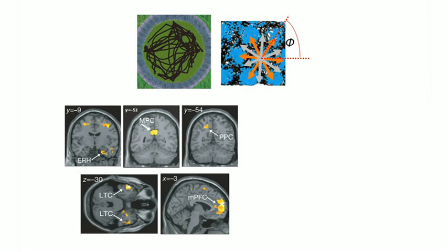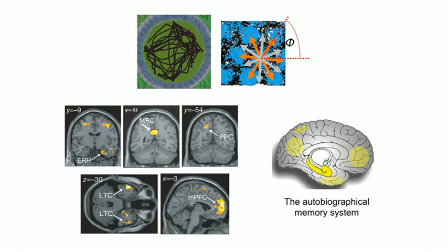So beyond spatial memory, if we look for this grid-like firing pattern throughout the whole brain, we see it in a whole series of locations which are always active when we do all kinds of autobiographical memory tasks, like remembering the last time you went to a wedding, for example.